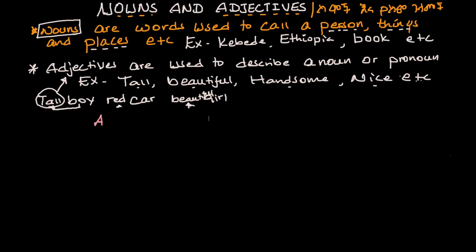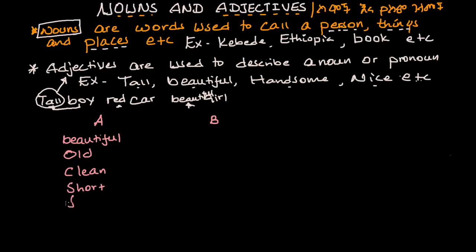We will now list our adjectives. First: beautiful, then old, then clean, short, fast, slow, tall, dirty.